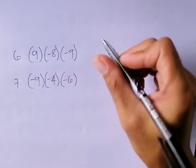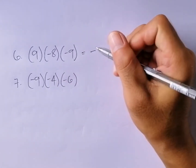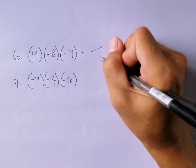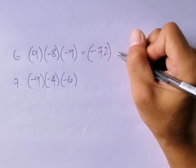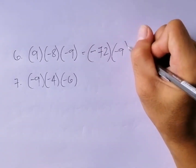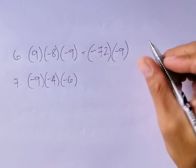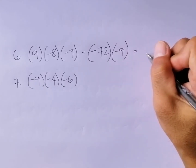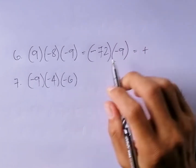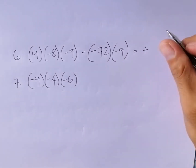Number six: positive nine times negative eight is equal to negative seventy-two. Then times negative nine — negative times negative is equal to positive. Seventy-two times nine is equal to six hundred forty-eight.